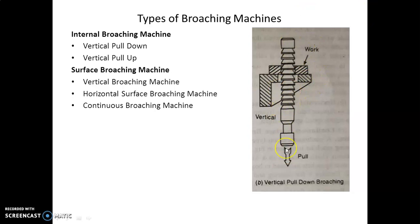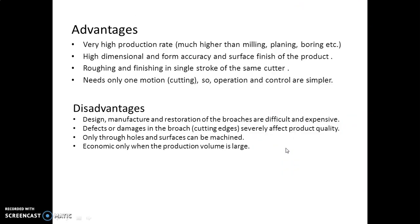Let's discuss the advantages and disadvantages of broaching machine. It has very high production rate, generally much higher than milling, planing, and boring. Dimensional accuracy and form accuracy and surface finish is very good. Roughing and finishing in single stroke of the same cutter. It needs only one motion - that is cutting - so operation and control are simpler.